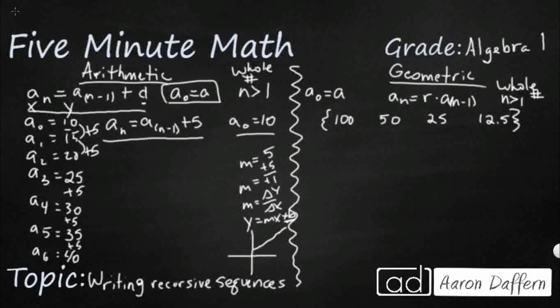And then your b is your y-intercept when x is 0. Well, we found that. That's the starting position. So we could also say aₙ equals, and then your 5x, so your 5a, and then your plus, what is our y-intercept? It's that 10.